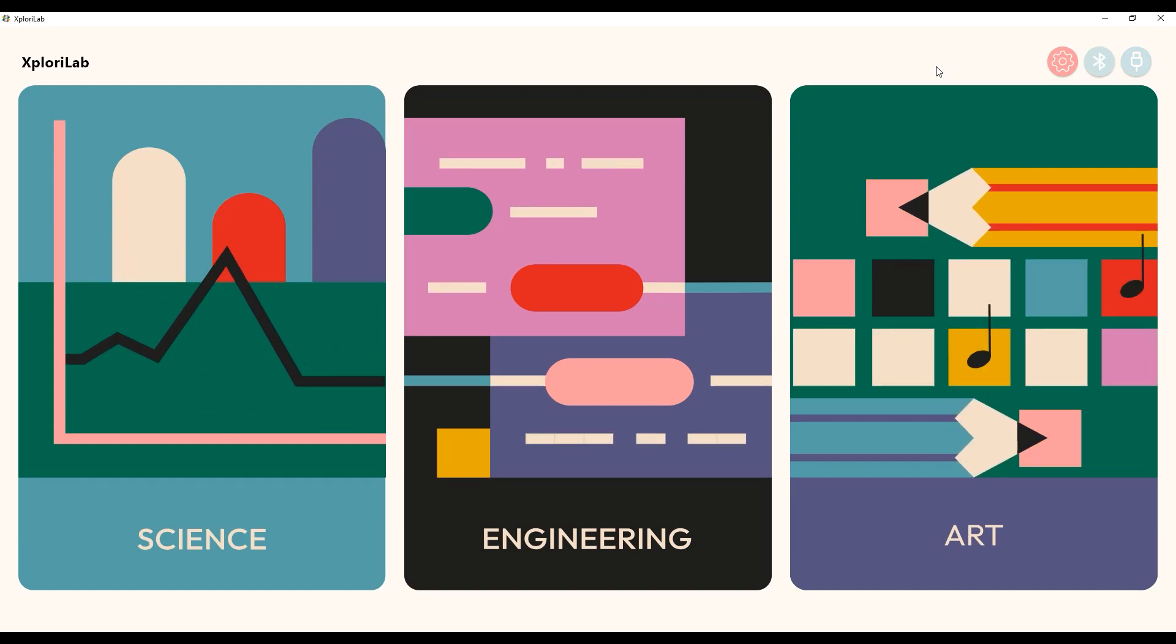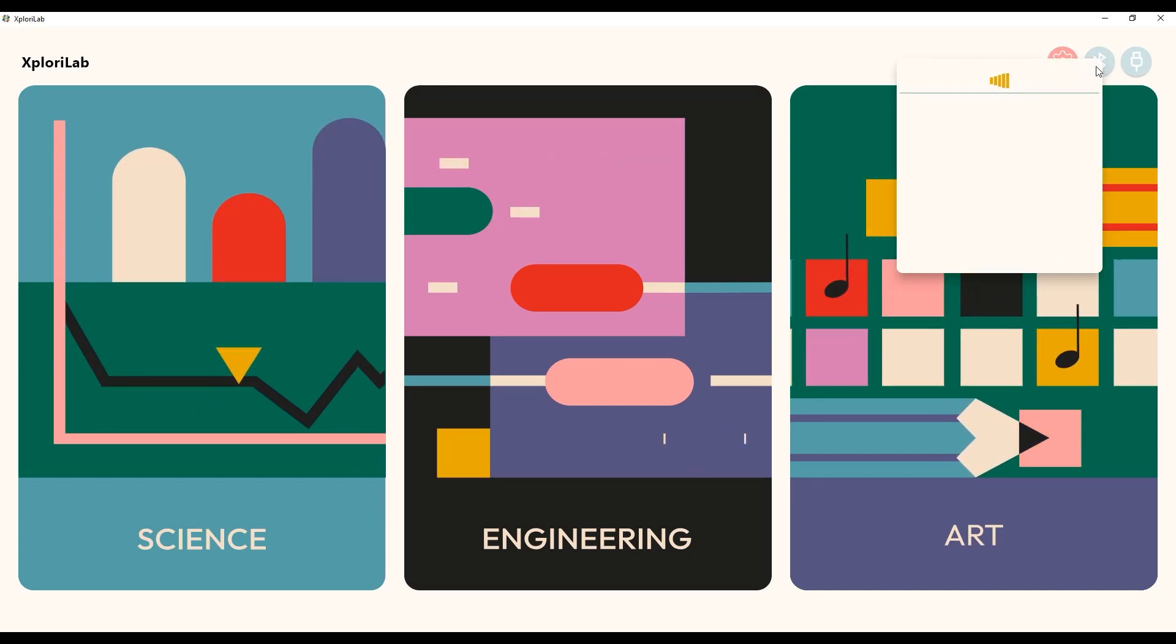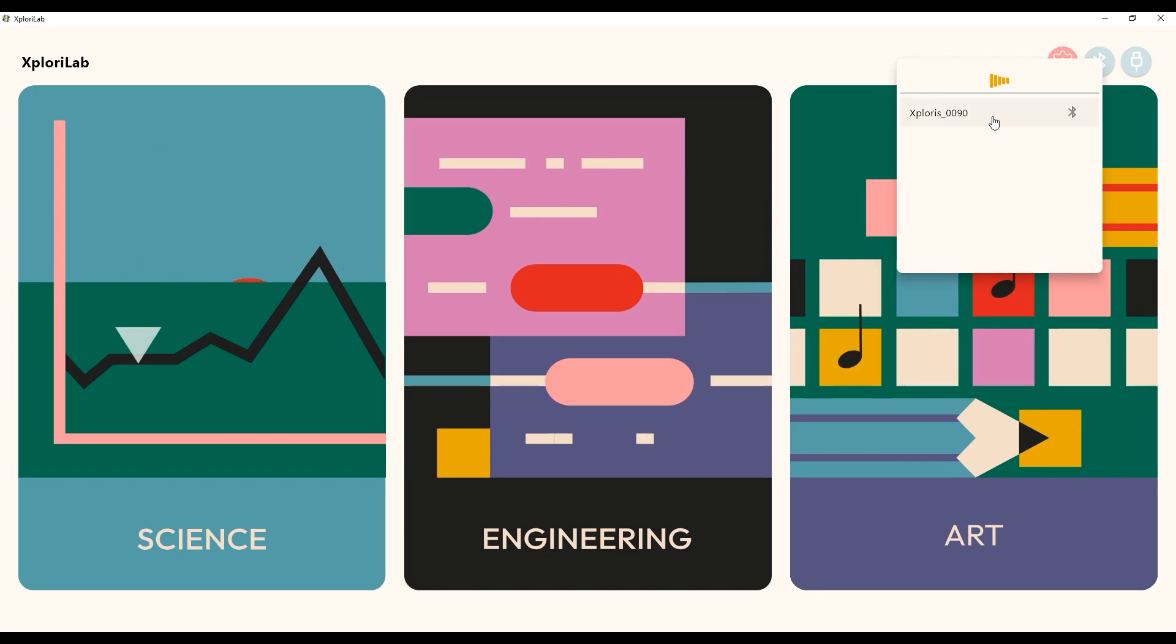The other way you can connect is using Bluetooth. Simply click on the Bluetooth button, and a selection of Xploris devices will show up.